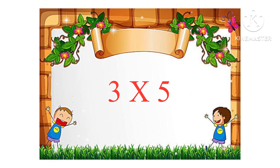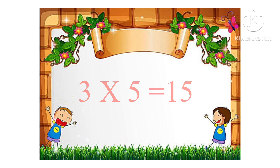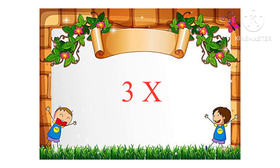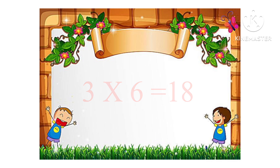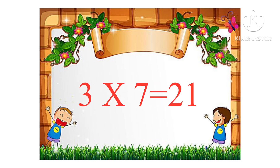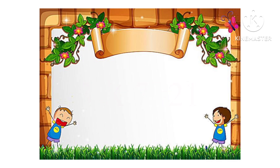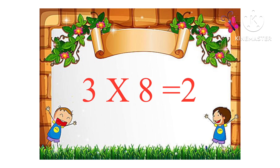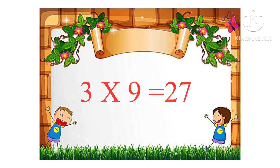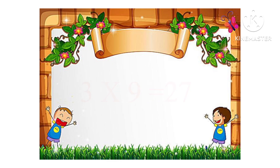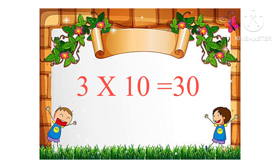3 5s are 15, 3 6s are 18, 3 7s are 21, 3 8s are 24, 3 9s are 27, 3 10s are 30.